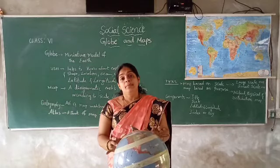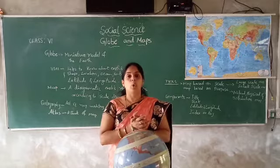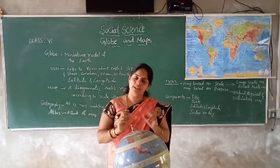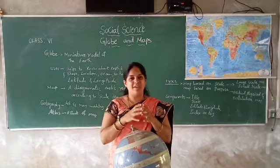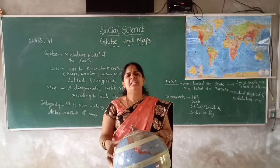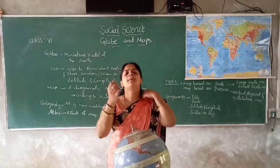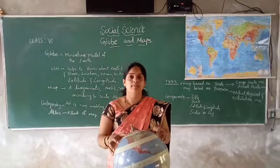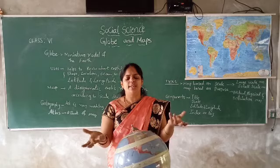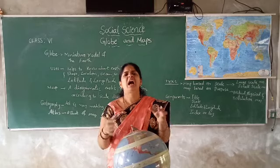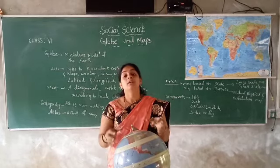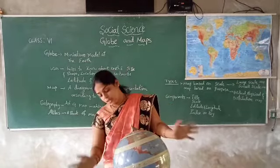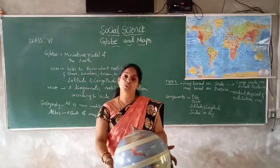These are the uses of the globe. But there is one small problem — globe is very heavy, we cannot take it very easily. And small parts of towns, cities, or countries we cannot identify on the globe. We can only identify large-scale features; we cannot identify all small locations or small boundaries.